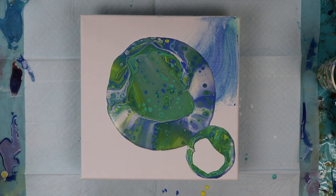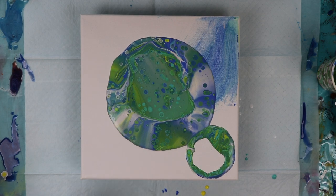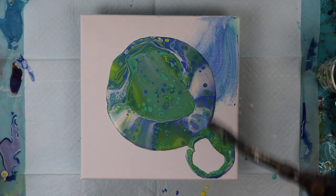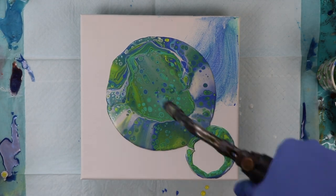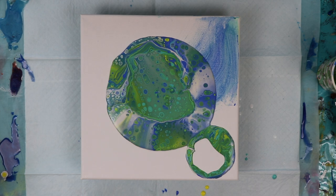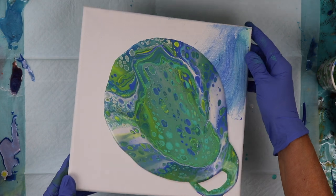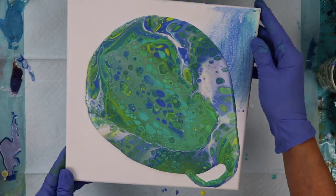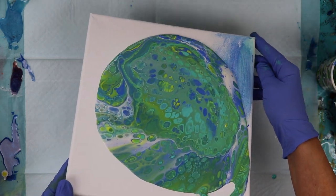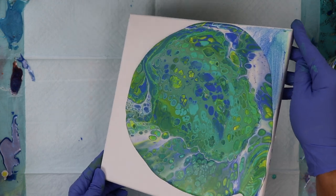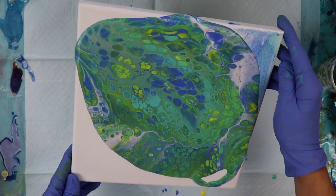So now I'm going to torch it so I can pop any bubbles and help cells develop. So I do see some more cells coming up. Let's tilt this and see what we have. I always try to bring it back to the center.